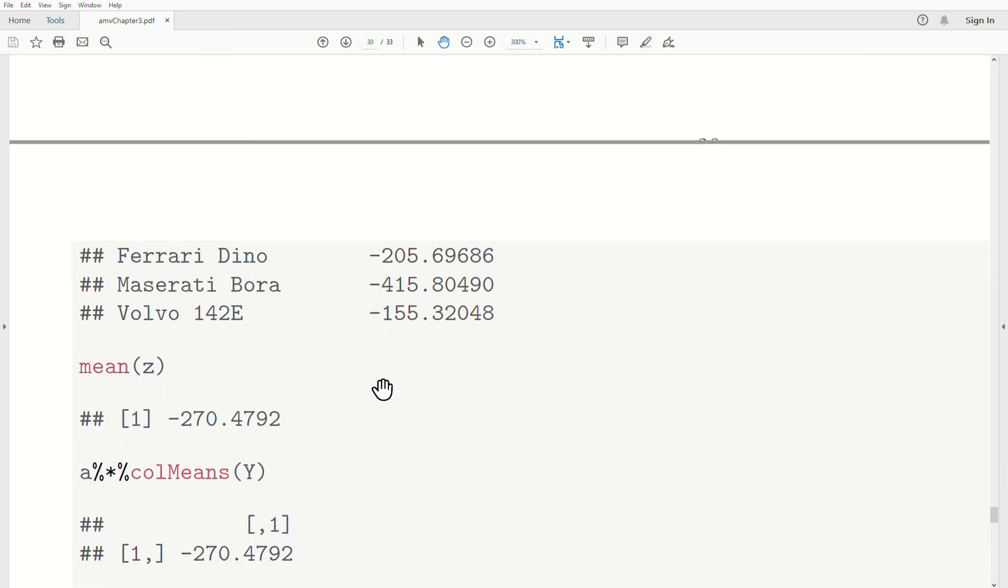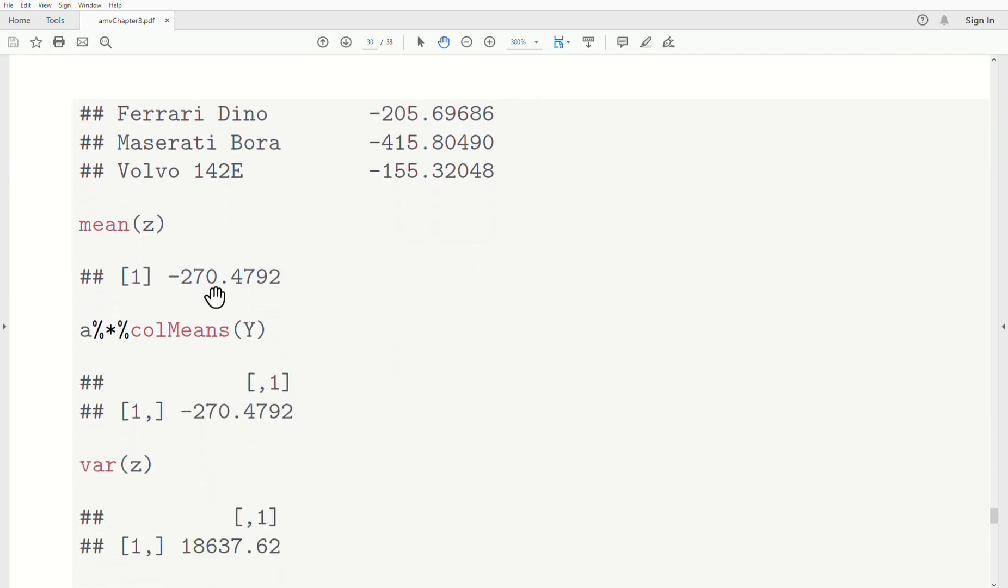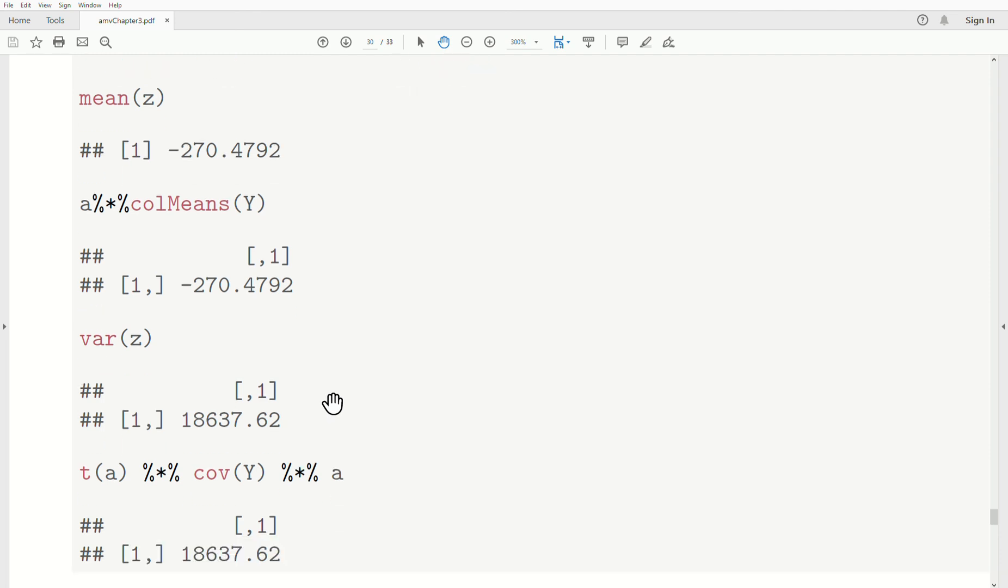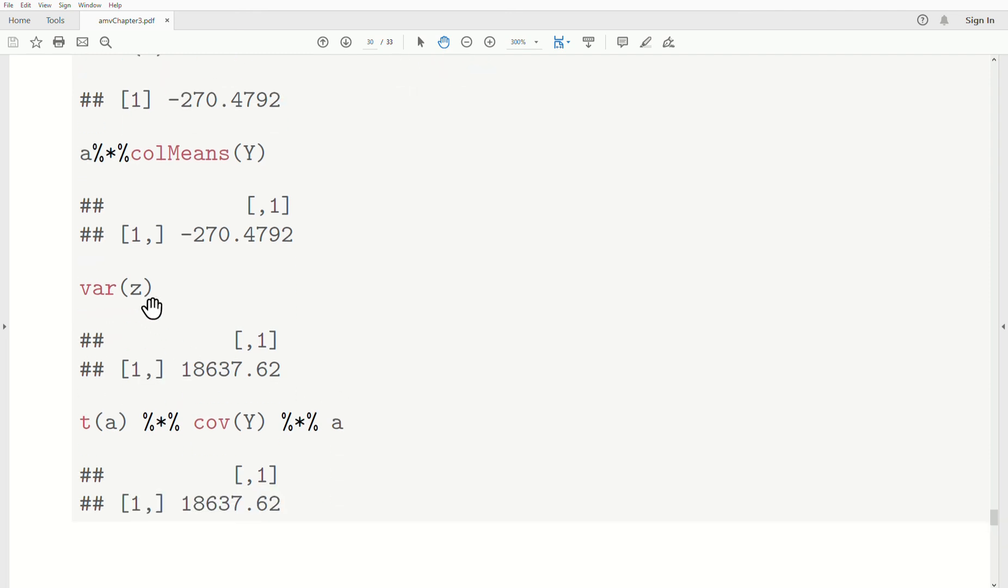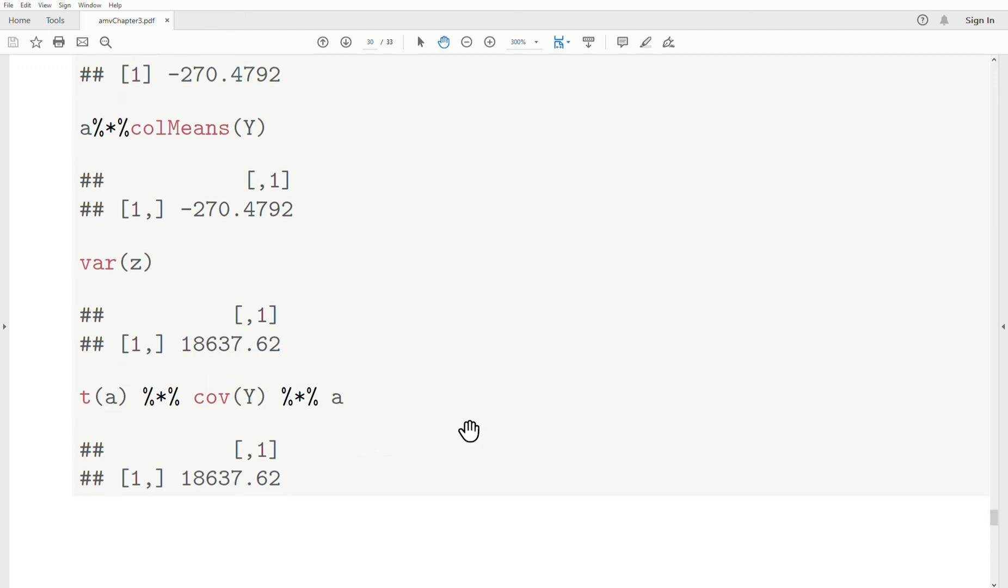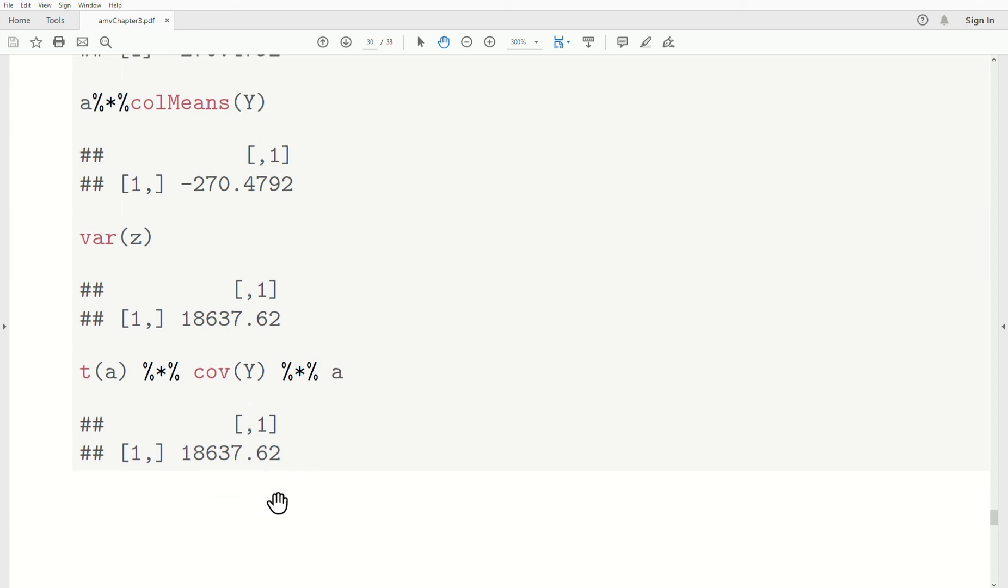Now, let's look at the mean of our Z. That's minus 270. But, if we look at it in matrix form, it's A times the mean vector of Y. And, we get the same thing, minus 270. The variance of Z's is 18,637. But, if we look at it in matrix product, we have the A transpose times the covariance of Y times A, and we get the same thing, 18,637.